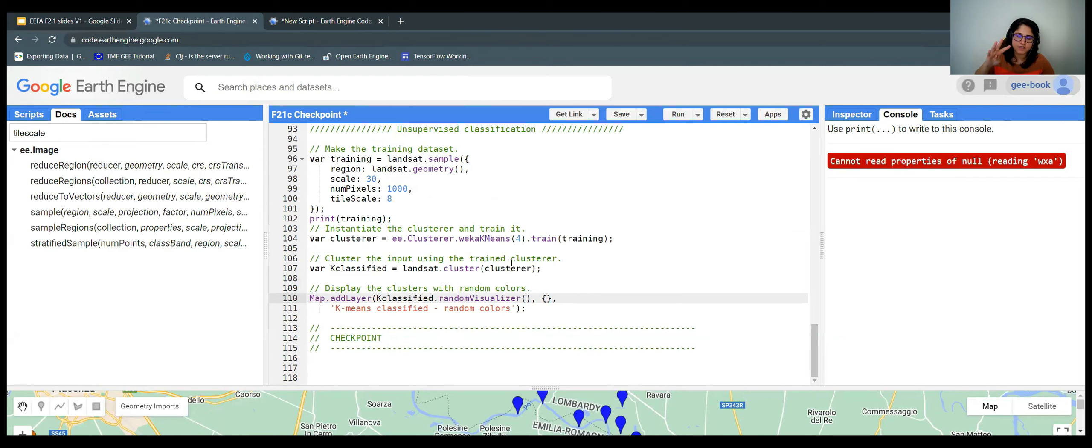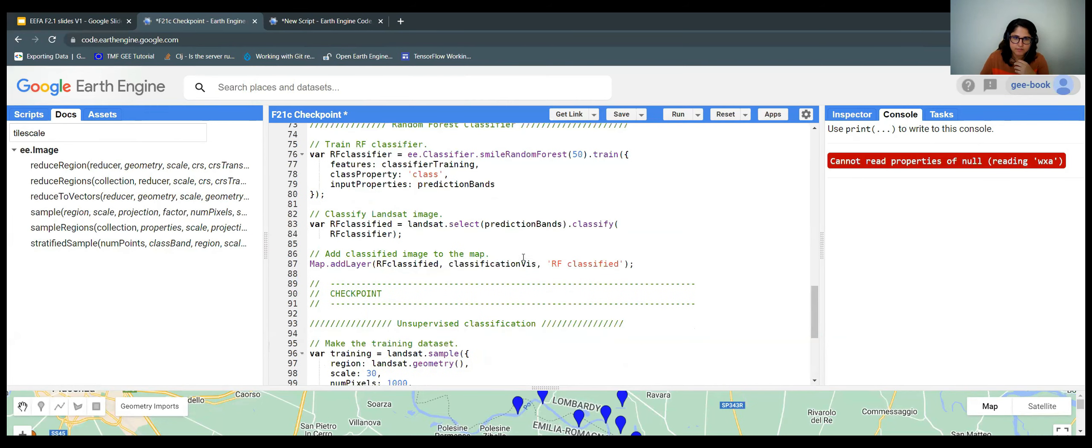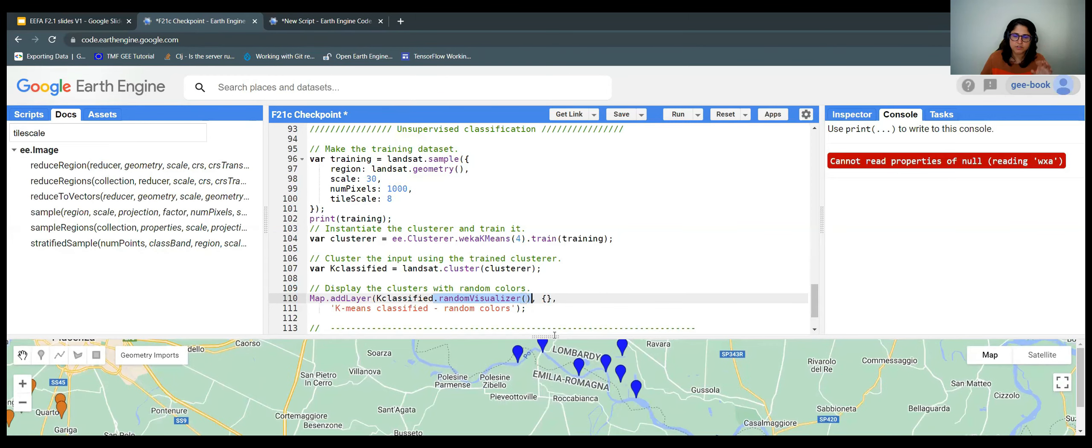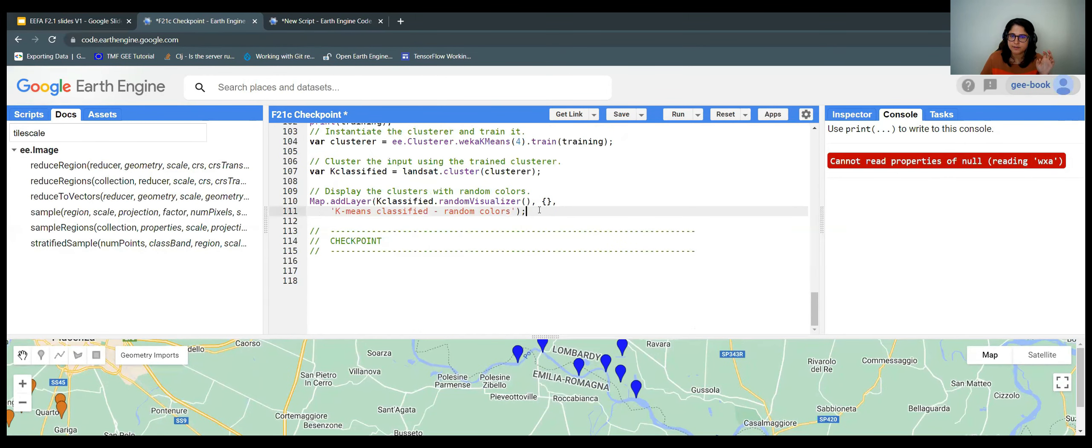So it doesn't make sense to have those colors assigned to the class codes we have to find. So what I'm using here is a random visualizer. So this function just creates colors for each of the pixel values we have. And I'm adding that to the map.